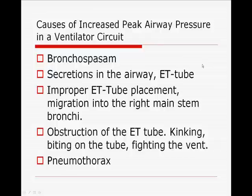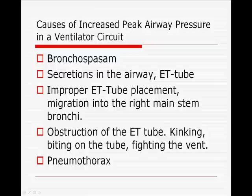Causes of increased airway pressure in a ventilator circuit: there are quite a few things that can cause this. In the vent circuit, bronchospasm will do it. Secretions in the airway or endotracheal tube, improper placement of the endotracheal tube — if the tube starts to migrate into the right main stem — any obstruction of the endotracheal tube such as kinking, biting of the tube, or fighting the ventilator. Pneumothorax is also a cause — air in the pleural space compresses the lung and can make peak pressures rise. So you may need to troubleshoot multiple possible causes when peak airway pressure rises on a ventilator.